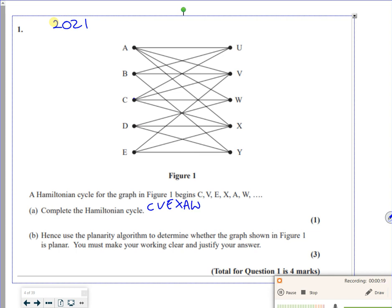So C to V to E to X to A to W. That's my cycle so far. If I leave W, I can go to C or D. I've already been to C, so I'm going to go to D. Then from D, I'm going to go to Y.